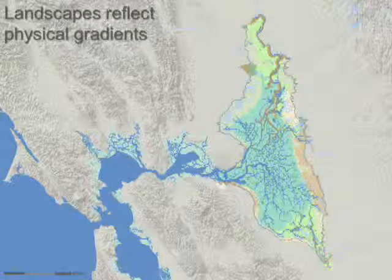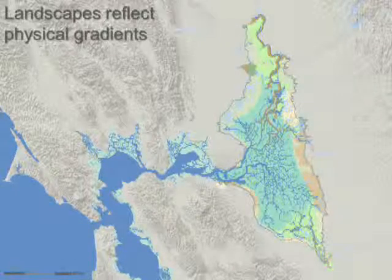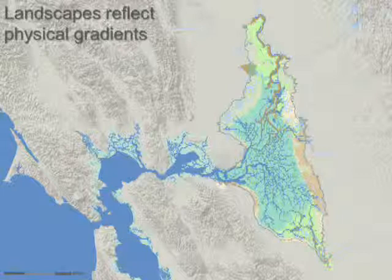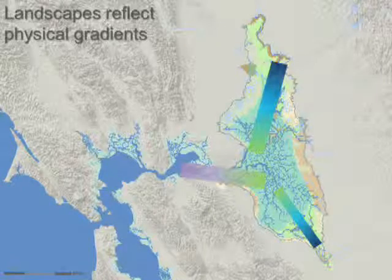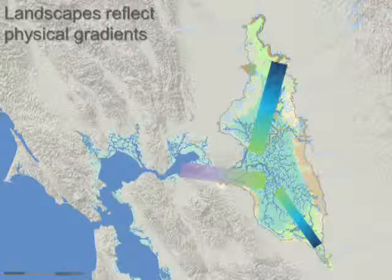To set up these major gradients in the landscape, it's important to recognize the underlying physical gradients across which these patterns are expressed. At the fundamental level, we have the gradient between brackish and fresh water at the delta mouth — which shifts depending on time of year — and then the gradient from tidal to non-tidal as you move upstream in the system. Those are the gradients over which the habitats are expressed.